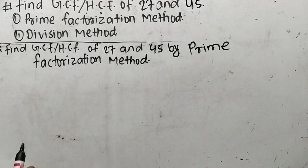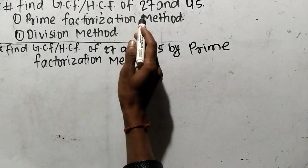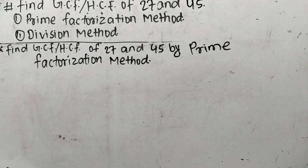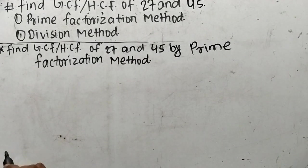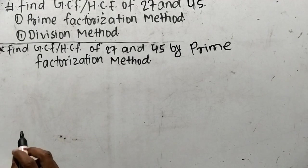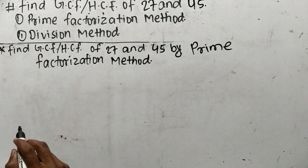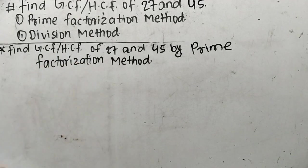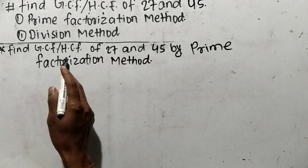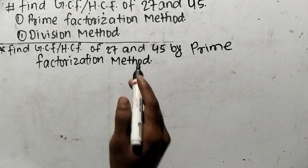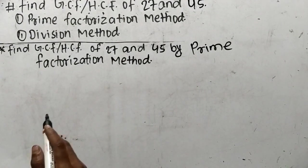Today in this video we shall learn to find GCF or HCF of 27 and 45. We shall find out GCF or HCF by two methods: first by prime factorization method, and second by division method. So let's find out GCF or HCF of 27 and 45 by prime factorization method.